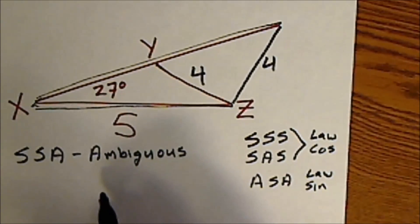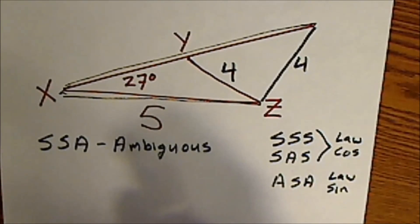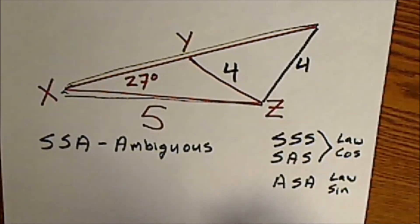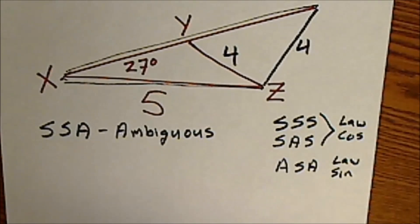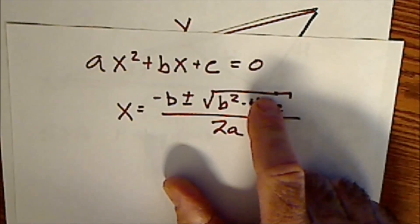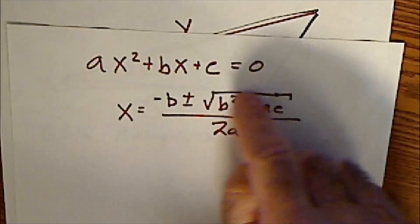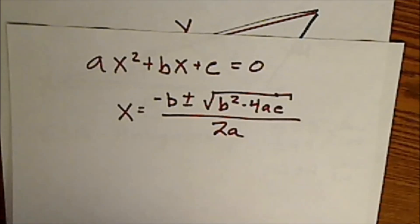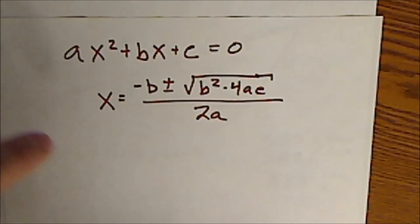When you're given a side-side-angle triangle, you're still going to use the law of cosines to solve. But you're going to have potentially no solutions, one solution, or two solutions. I'm going to use the law of cosines and also the quadratic formula. When you take the quadratic, you have negative b plus or minus the square root of b squared minus 4ac over 2a, and this is where your two possible solutions come in. If the square root is 0, you'll have one solution; if the value is negative, you'll have no solutions.